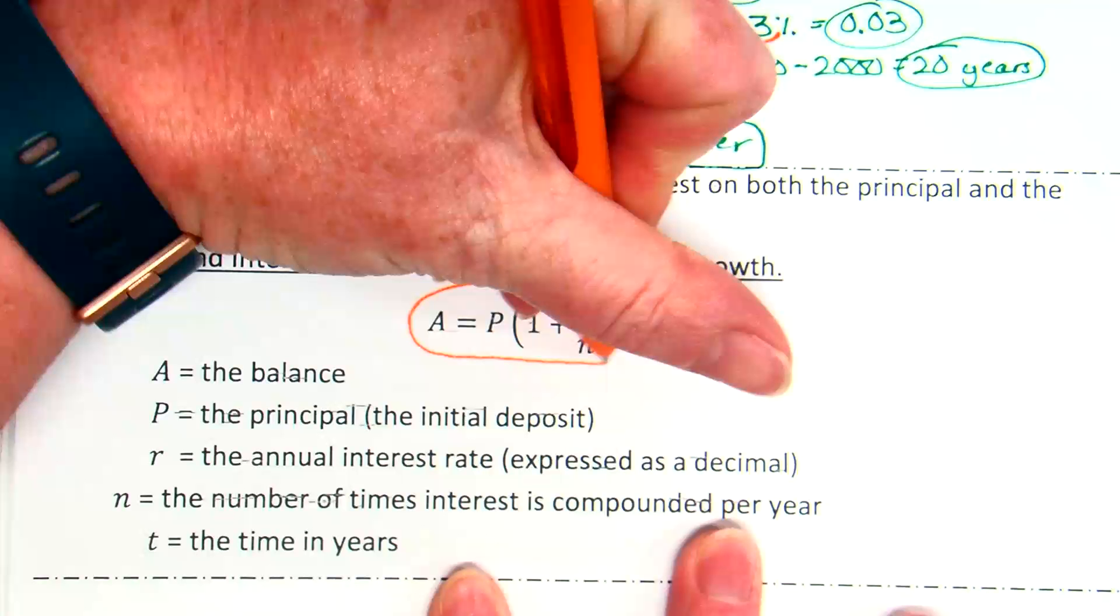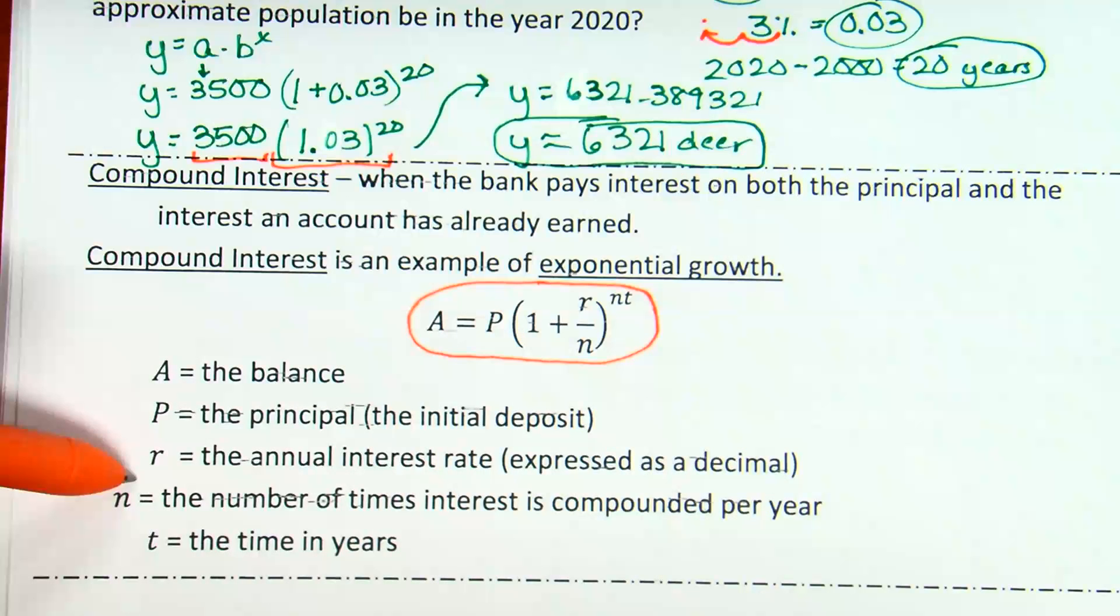Okay. A, which is the total amount in the account, equals P, which, notice, P stands for the principal. Kind of like initial value on the last problems. R is the annual interest rate. Just make sure you use it as a decimal. N is the number of times interest is compounded per year. So, like if it says quarterly, that's four times a year. Annually is once a year. Semiannually is twice a year. So on and so forth. And then T is the time in years.